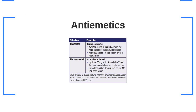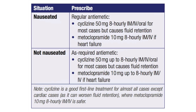Next is E. E stands for anti-emetics, and you should consider these for two groups of patients: nauseated and non-nauseated. In nauseated patients, consider prescribing a regular anti-emetic such as cyclizine or metoclopramide. In non-nauseated patients, be mindful that they may become nauseated and therefore prescribe similar anti-emetics on the PRN or as-required section of the drug chart. A common mistake is to prescribe cyclizine in fluid retention caused by heart failure — this should be avoided as it will worsen the retention.